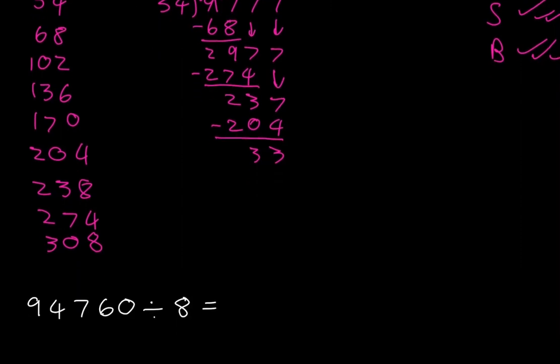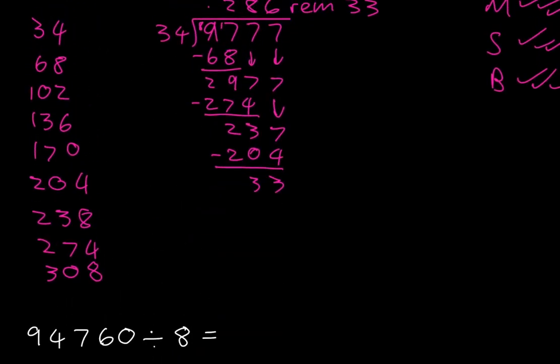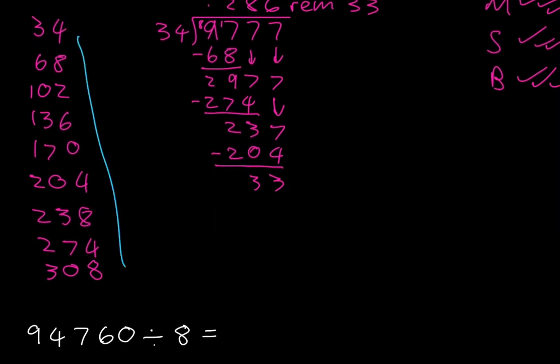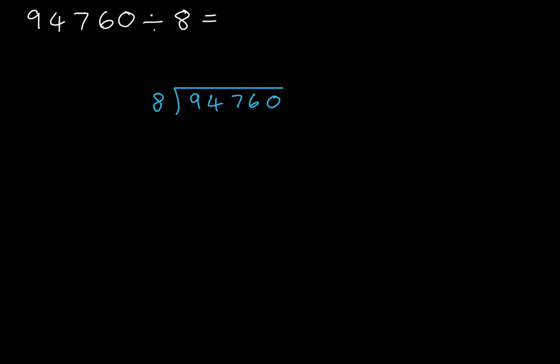Let's do some more examples to try and get a grasp of this. Here the question is 94,760 divided by 8. We'll go along with the same method. Now, because I know my 8 times table, I won't do what I did in the last example and write down multiples of it.